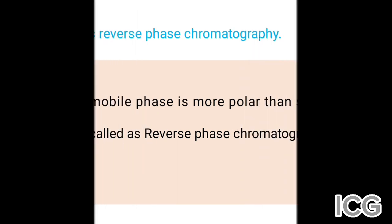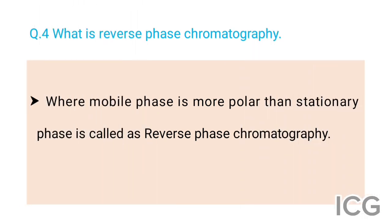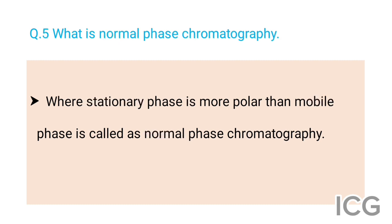then HPLC column; then detector; and then your data acquisition. The next question is: what is reverse phase chromatography? The answer is where the mobile phase is more polar than the stationary phase, it is called reverse phase chromatography. The next question is: what is normal phase chromatography? The answer is where the stationary phase is more polar than the mobile phase.